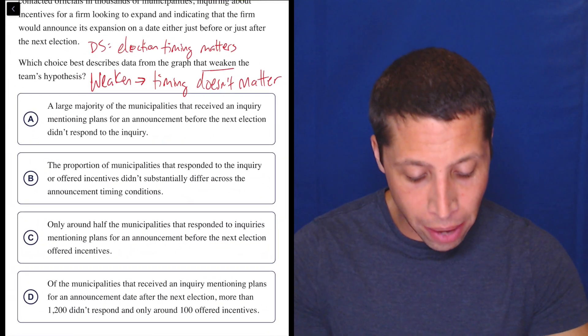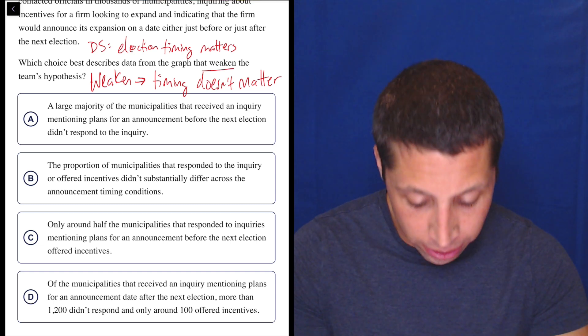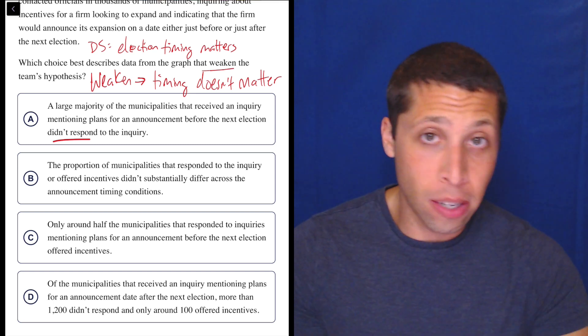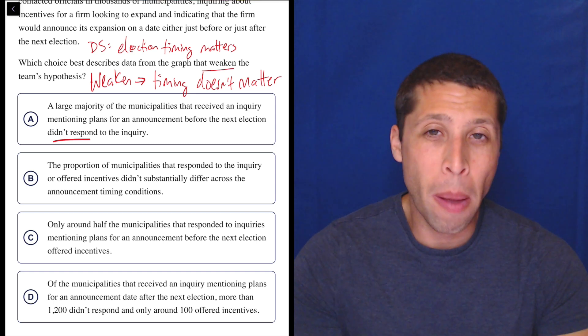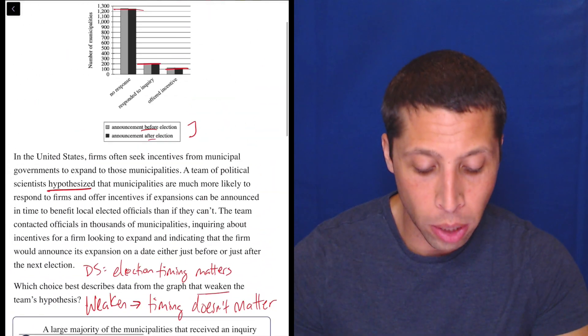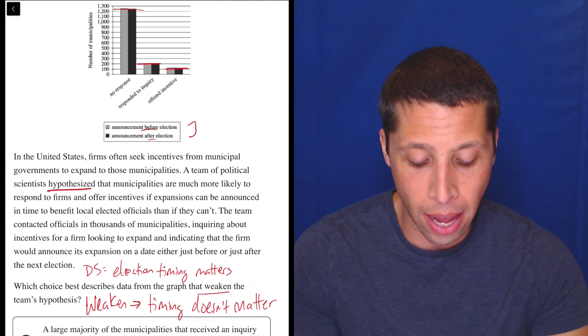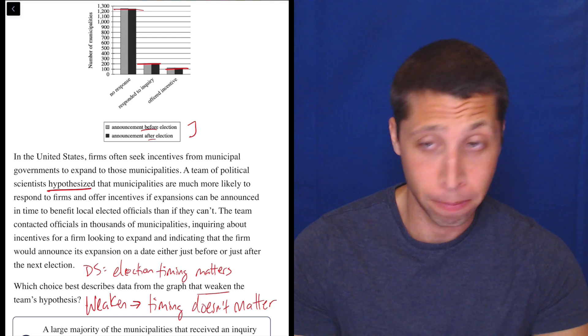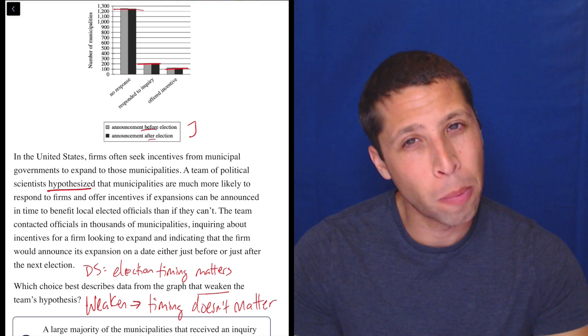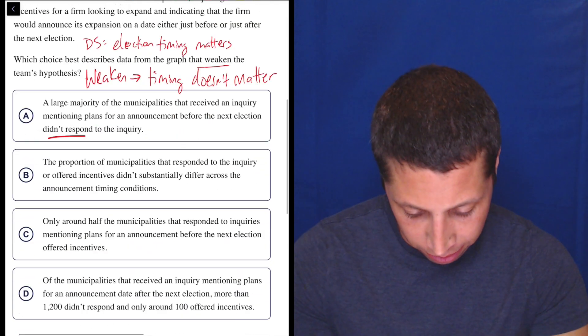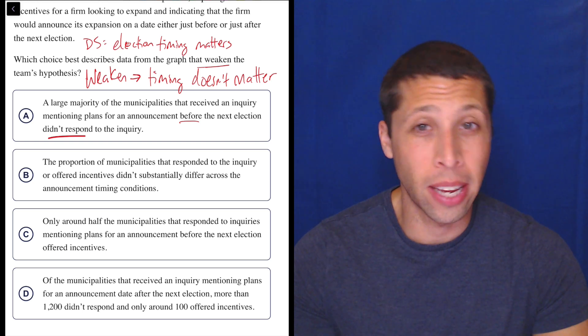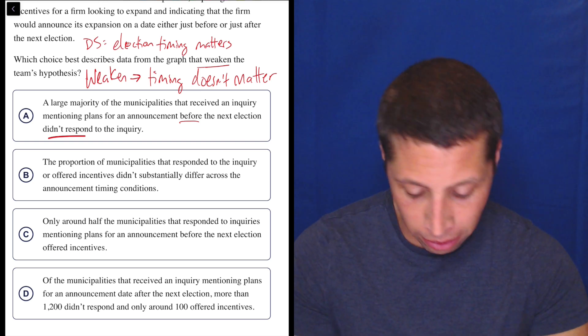A, a large majority of the municipalities that received an inquiry mentioning plans for an announcement before the election didn't respond to the inquiry. Well, you might think that the fact that it didn't respond has something to do with it. But remember, if the timing doesn't matter, what we kind of would want here is to compare the two colors. We want to say that before and after for one of these things didn't make a difference in the numbers. So just by looking at the no response, does it give us one? It focuses on just before the election. We would really want to say like before and after in this choice. So let's look at B.